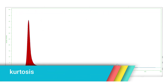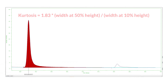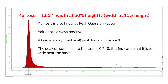The kurtosis provides a measure of symmetric deviations from an ideal Gaussian peak. It is defined by the formula: kurtosis equals 1.83 times the width at 50% height divided by the width at 10% height. The kurtosis is also referred to as the peak Gaussian factor. Kurtosis values are always positive. A Gaussian peak has a kurtosis of 1. A peak that is too wide near the top has a kurtosis greater than 1, and a peak that is too wide near the baseline has a kurtosis less than 1.